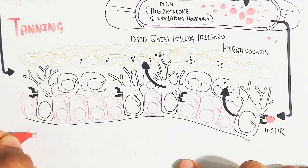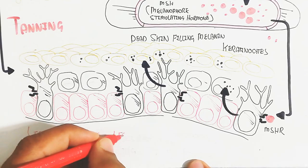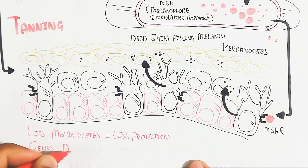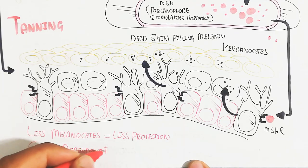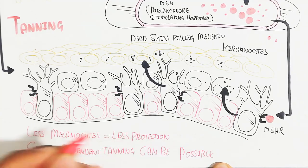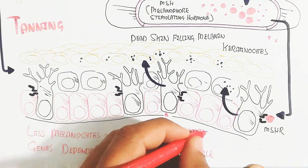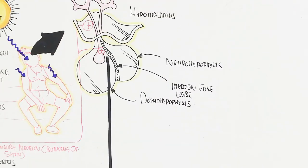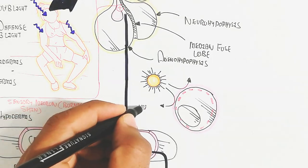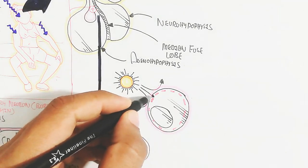Less melanin production, determined genetically, leads to less protection and less darkening of the skin, resulting in a fairer skin color. Gene-dependent tanning is also possible — genetic mutations can activate more genes to produce more melanin.